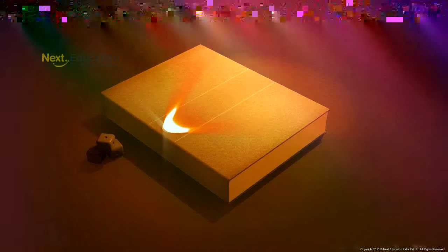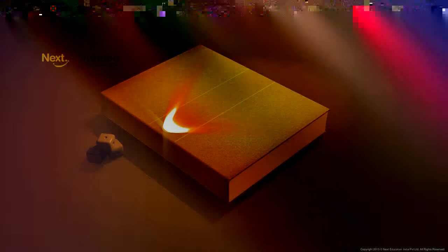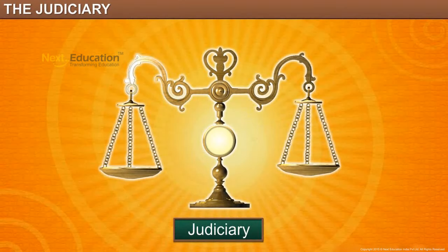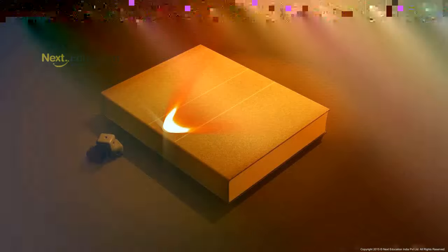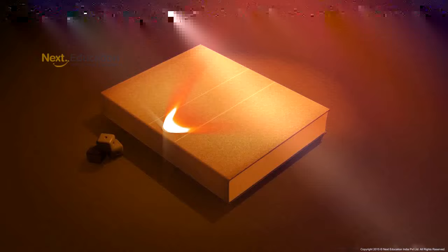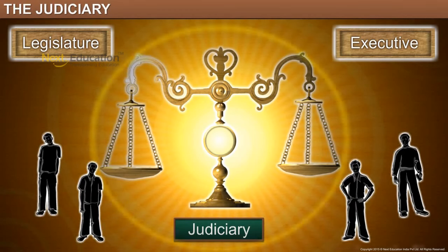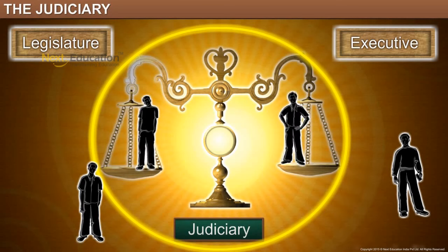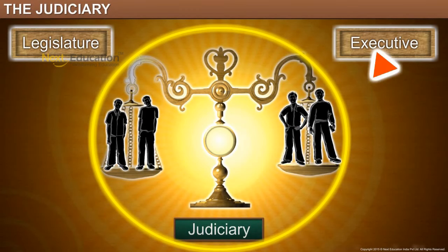In India, the judiciary is an independent body that plays a critical role in the functioning of the country. It has the sole right to make or break decisions without the interference of the government, which includes the legislature and the executive. This separation of powers ensures impartial equal justice to all citizens of India. It also prevents influential people like politicians and members of parliament from manipulating the judiciary.